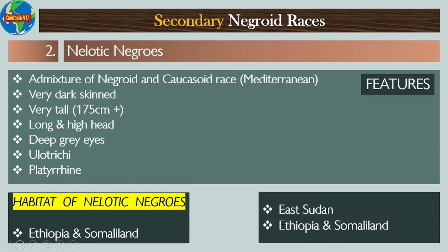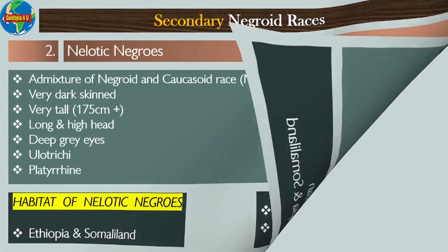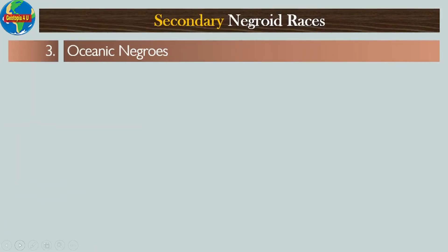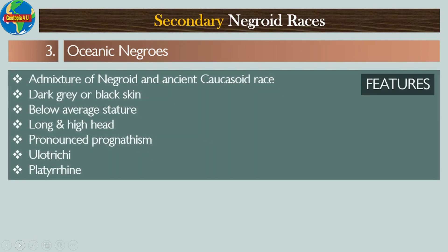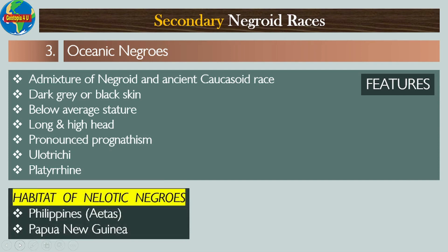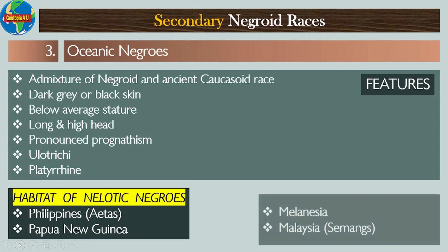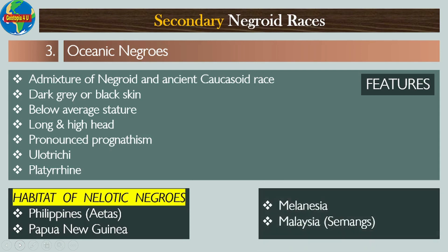Number three: Oceanic Negros. Their features include: they are an admixture of Negroid and ancient Caucasoid race; they have dark gray or black skin; they have a below-average stature; they have a long and high head; they have pronounced prognathism; they have ulotrichous hair; and they are platyrrhine. The habitat of Oceanic Negros includes the Philippines, Papua New Guinea, Melanesia, and Malaysia.